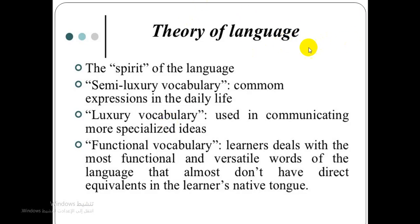What is the theory of language according to the silent way method? In silent way, the language is seen as groups of sounds arbitrarily associated with specific meanings and organized into sentences by grammar rules. Language is separated from its social context and taught through artificial situations, usually represented by rods.